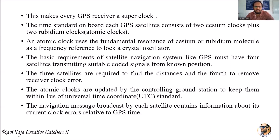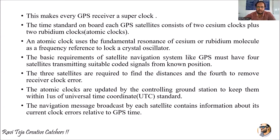The time standards on each GPS satellite consist of two types: cesium clock pulses as well as rubidium clocks. These rubidium clocks are called atomic clocks. An atomic clock uses the fundamental resonance of cesium or rubidium molecules as a frequency reference to lock a crystal oscillator.